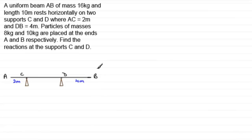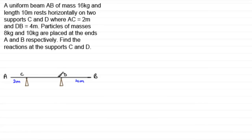We've got a uniform beam AB of mass 16 kilograms and of length 10 meters. It rests on two supports C and D, where AC is 2 meters and DB is 4 meters. Particles of masses 8 kilograms and 10 kilograms are placed at the ends A and B respectively. We have to find the reactions at the supports C and D.